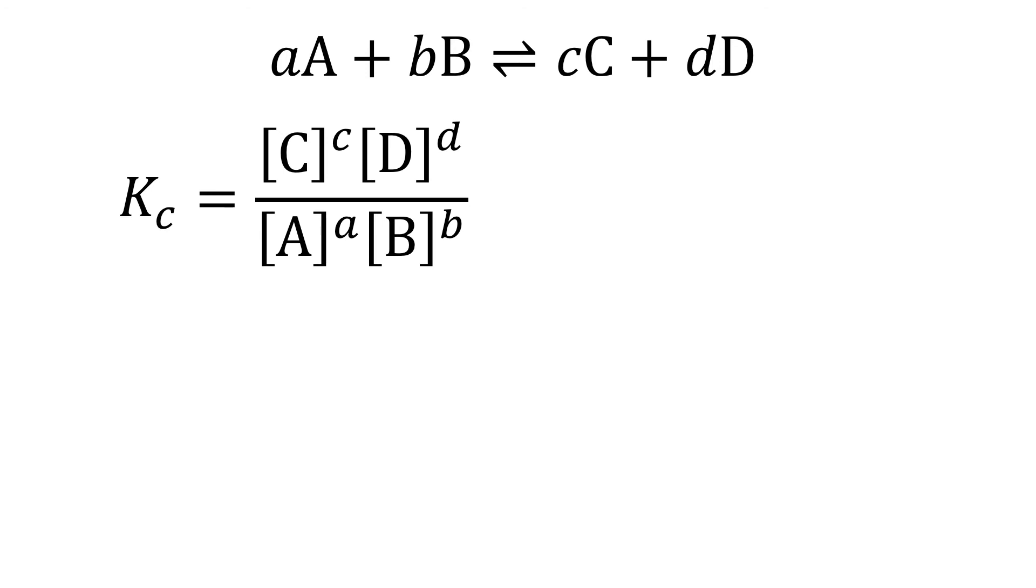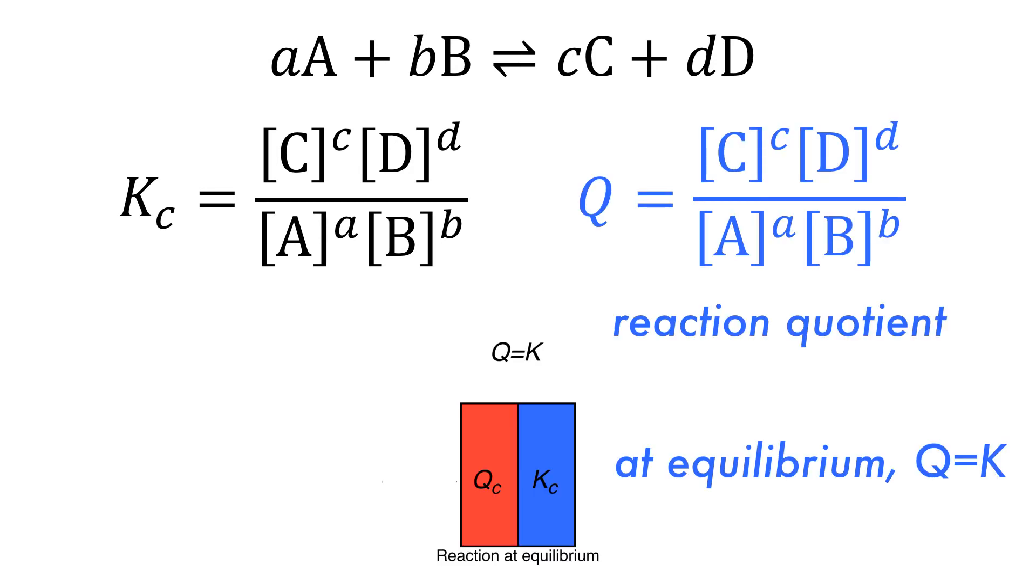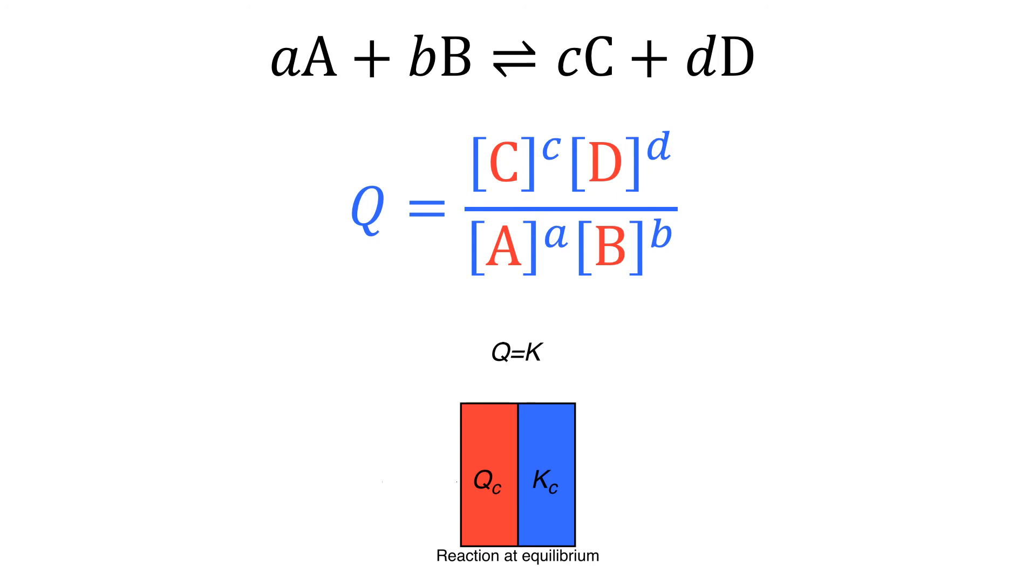Whilst the equilibrium constant is good for expressing the concentration at equilibrium, there is a need to relate concentrations at any stage of the reaction. For this, the reaction quotient is used. The concentration values are inserted into the equation to calculate the reaction quotient, Q.